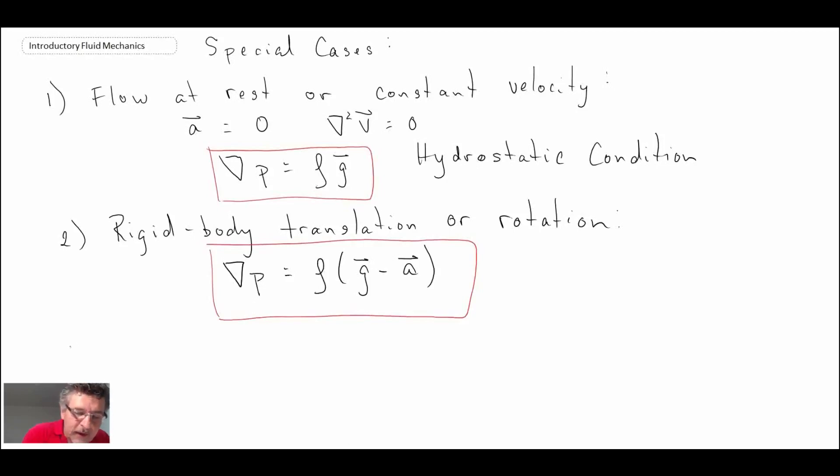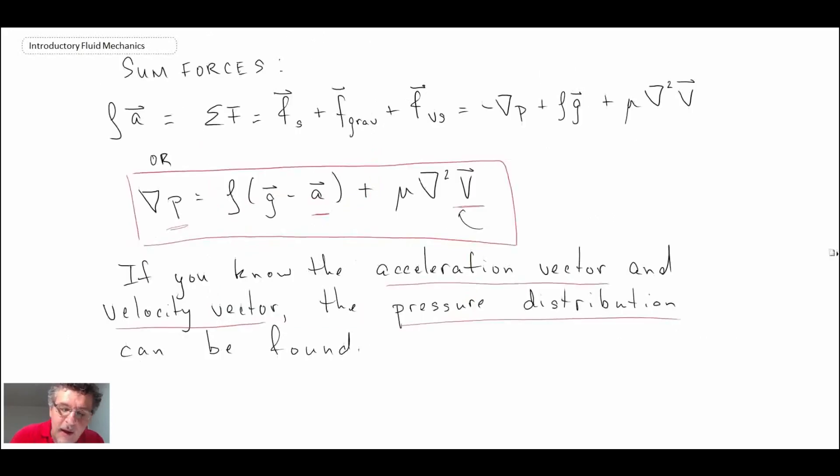And the last one that can exist is if you do have fluid motion and velocity. But let's say the fluid motion is what we call irrotational. So irrotational motion is characterized by del cross v equals zero. And with that, what would happen is our grad squared v term would disappear. And consequently, we have another simplification of the equation. Looking back, it's very similar to the solid body rotation one.